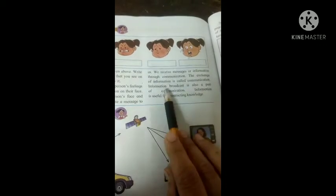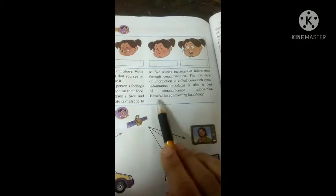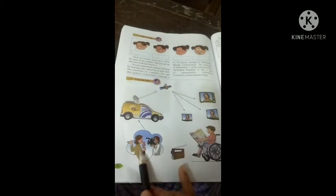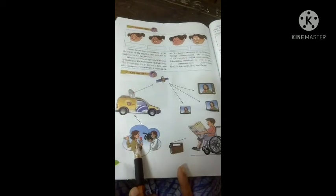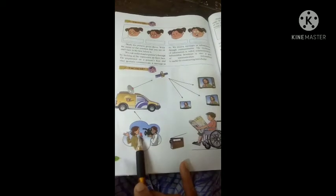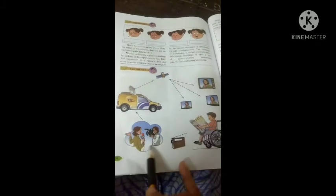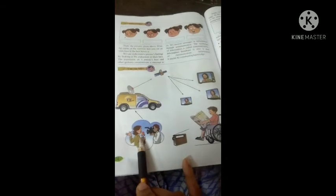Information broadcast is also a part of communication. Information is useful for constructing knowledge. We need language to form knowledge from information. Now we can see some pictures. This is the TV channel, this is the cameraman, this is the editor. This is the photo, the picture which shows the scene.